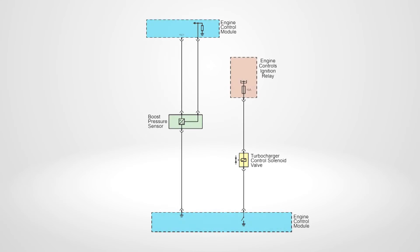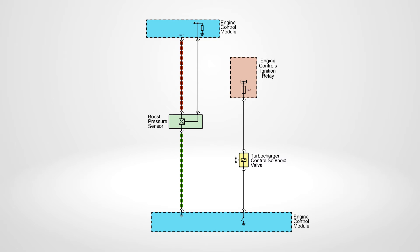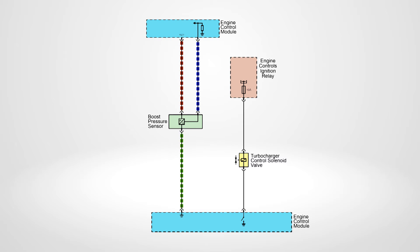The engine control module supplies 5 volts and a low reference to the turbocharger pressure sensor. The turbocharger pressure sensor provides a signal to the ECM, which is relative to the pressure changes in the manifold.